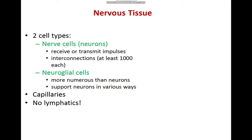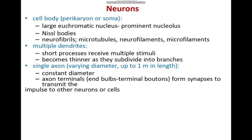In nervous tissue there are two types of cells: nerve cells (neurons), which receive and transmit impulses, and neuroglial cells, which are more numerous than neurons and support them in various ways. There are capillaries present but no lymphatics. The brain and spinal cord are also associated with connective tissue and are covered by the meninges, which are dense irregular connective tissue membranes.